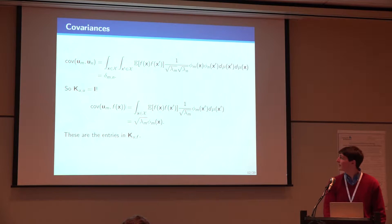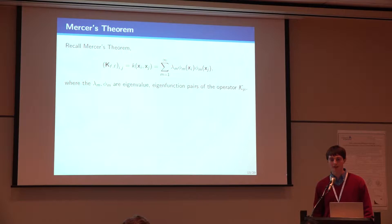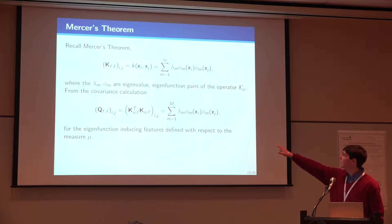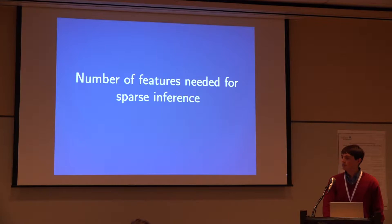And then we can just use eigenfunction property here, and we can also write down the entries in KUF, and we'll need this covariance later. So, Mercer's theorem tells us that we can write out our kernel as an infinite sum, which is essentially an inner product of the eigenfunctions of this covariance operator, times the eigenvalues. And if we just multiply out these two matrices, we get something which looks very similar. But now it's a truncated version of the sum coming from Mercer's theorem.